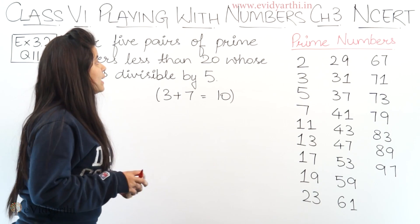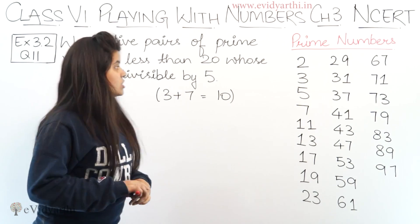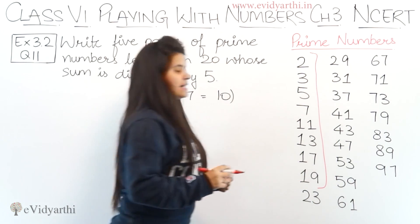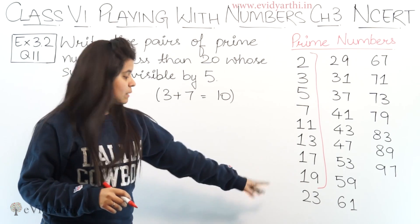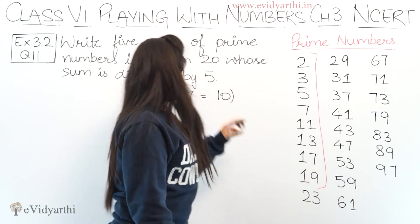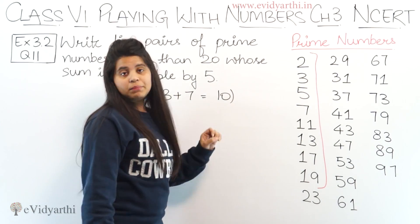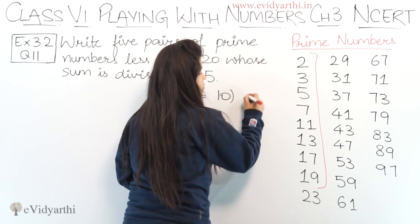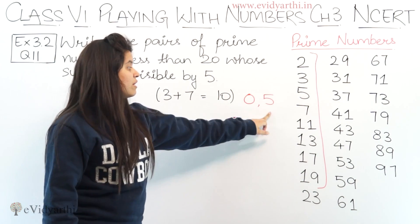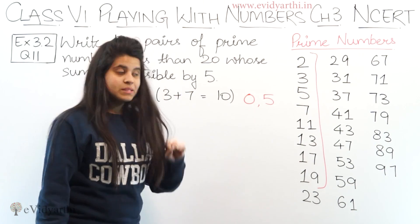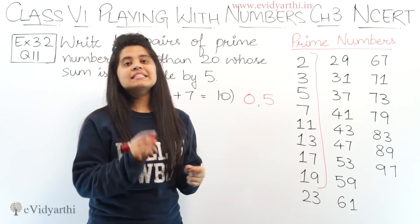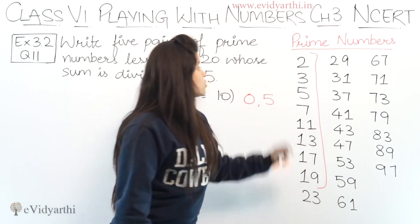Now since they said prime numbers should be less than 20, from the prime number list we can only take from 2 to 19, because those are less than 20. After that it's more than 20. How will we make pairs of numbers? See, if any number comes in the 5 times table, then at the end it will either have 0 or 5. If it has 0 or 5 at the last, that means it's divisible by 5.